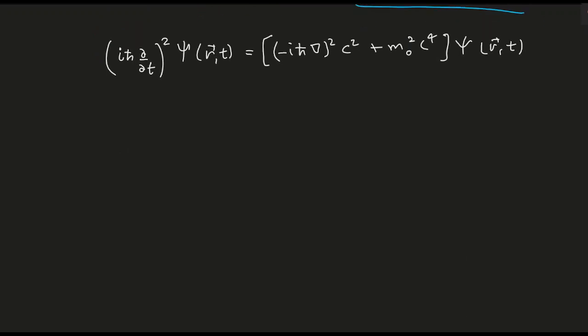So i² as you know is minus 1, and we have ℏ² del² ψ by del t². Similarly here, minus 1 squared is plus 1 and i² is minus 1, so we will have minus ℏ² del² C² operated on wave function ψ of r,t, plus M₀² C⁴ operated on wave function ψ of r,t.